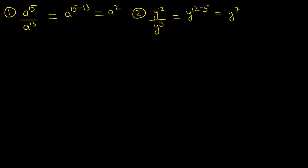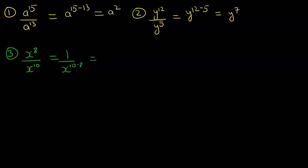Let's take a look at another one where the denominator is actually bigger. Problem number 3: x to the power of 8 over x to the power of 10. When the denominator has the bigger power, we simply write 1 over the base, which is x, and then do the subtraction in the denominator — 10 minus 8 — and we get 1 over x squared.